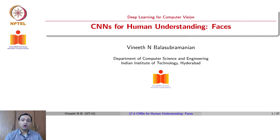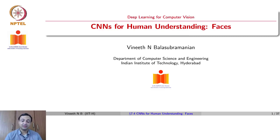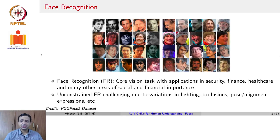We will now move to another important task where CNNs have been extremely useful over the last few years. In computer vision tasks, CNNs are used in understanding humans from various different perspectives. In this first lecture, we look at understanding faces and processing faces for tasks such as recognition and verification. Face recognition has remained an extremely important computer vision task for several decades now, as part of biometrics. It has applications in security, finance, healthcare, and various other aspects of society.